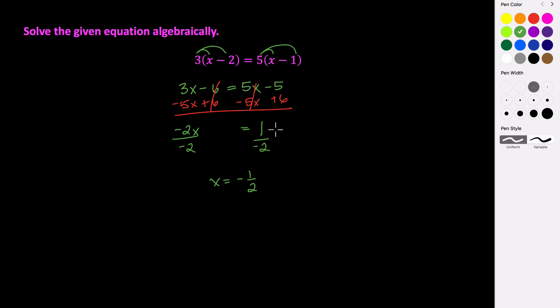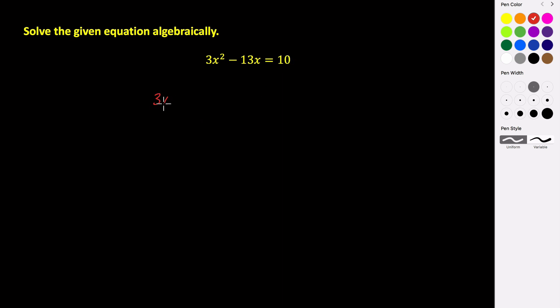So let's take a look at another example. For this example, we're given a quadratic 3x squared minus 13x equals 10. So this is one where we're going to actually make this equation equal to 0 so that we can solve. So we need to move this 10 to the left side by subtracting it. And so we will have 3x squared minus 13x minus 10 equals 0.